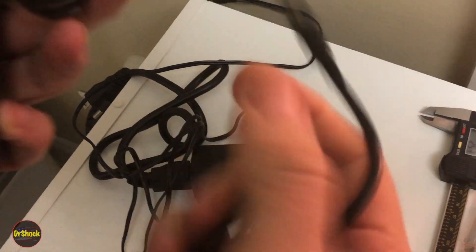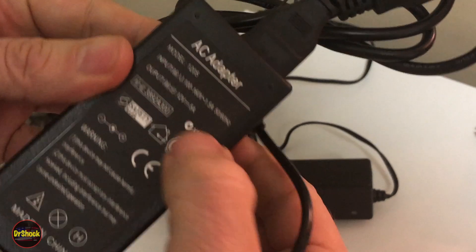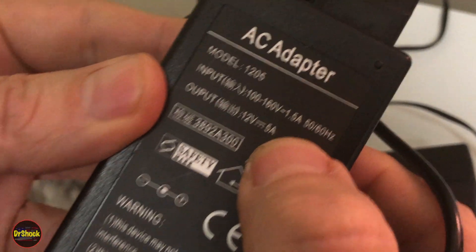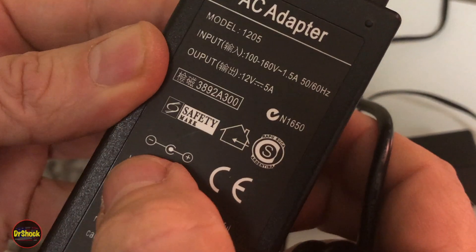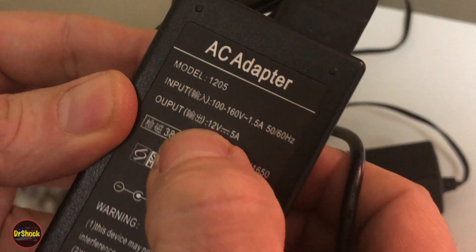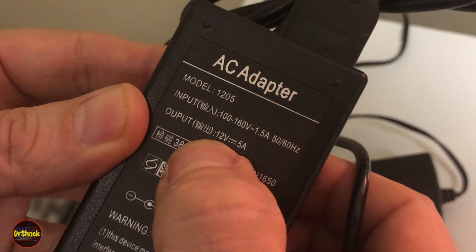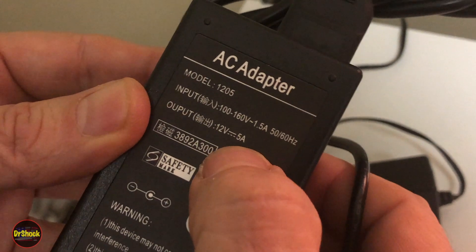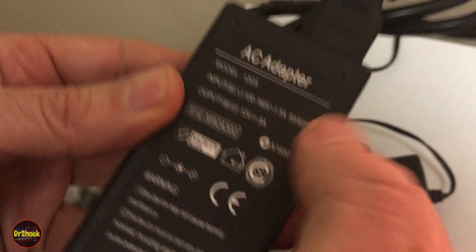And this one here happens to be a 5 amp one and that's fine, right? It's more important like I was saying is that we get the right polarity in the center and ground on the shell and that we don't exceed the 12 volts or fall under the 12 volts. Having 5 amps is fine because the EdgeRouter will only take the amperage that needs.